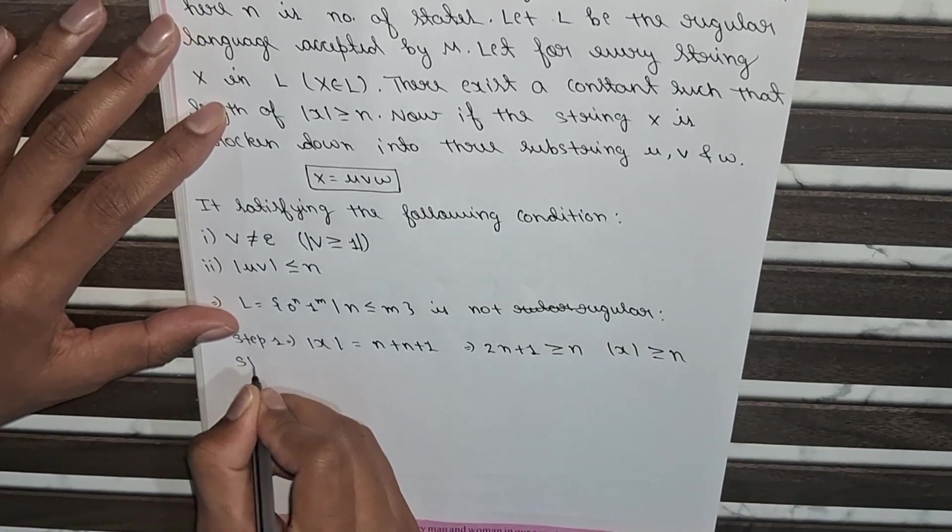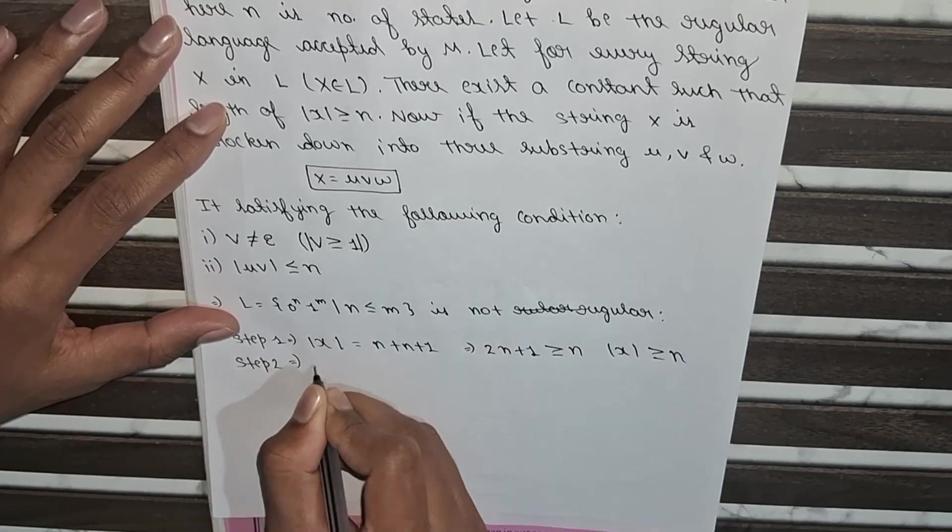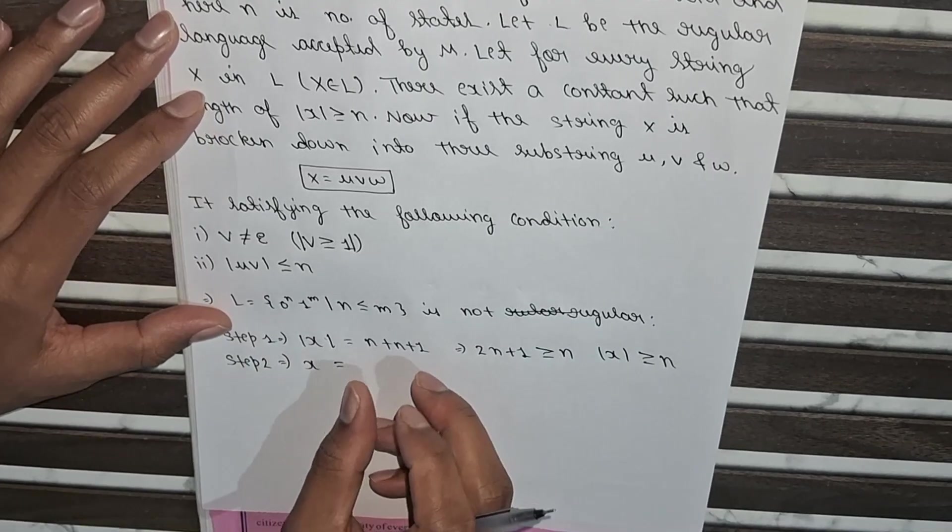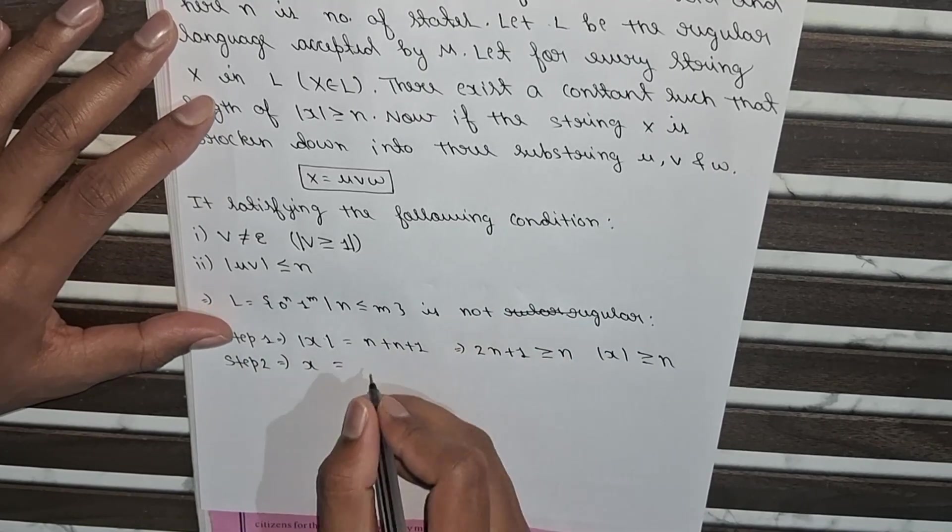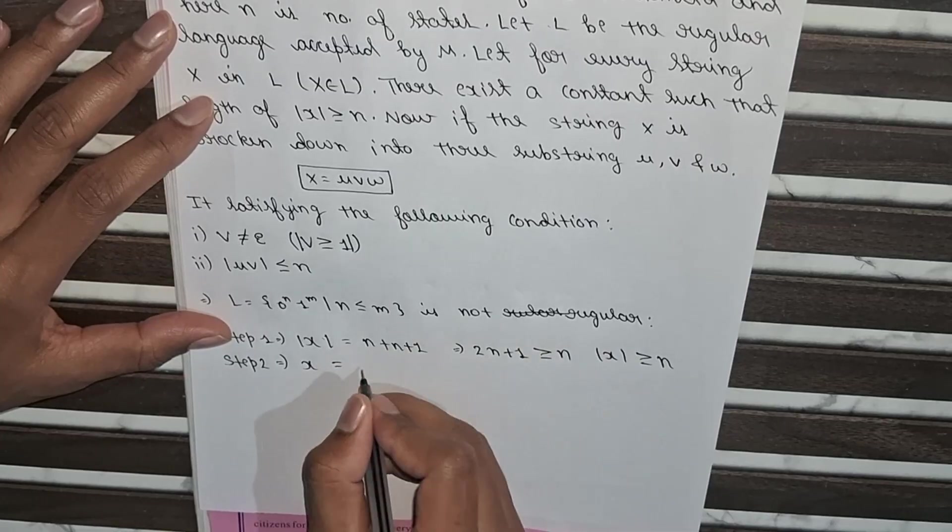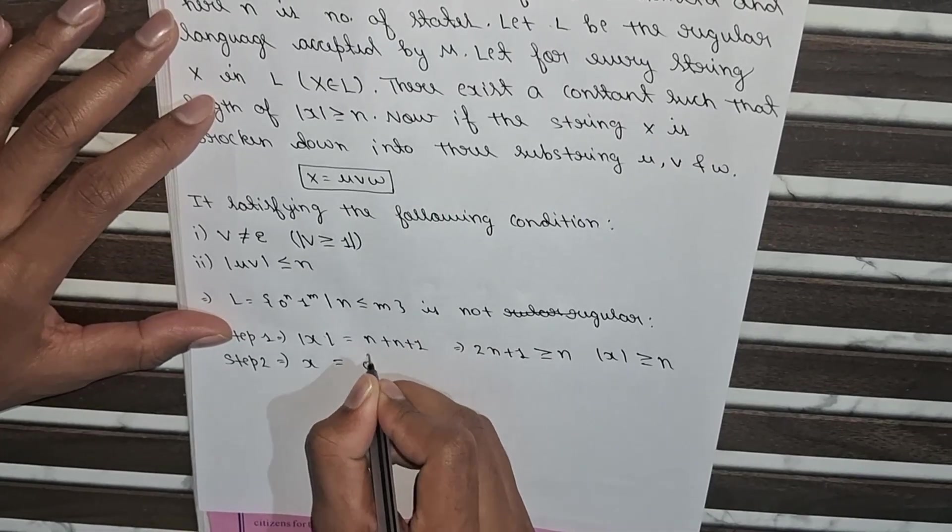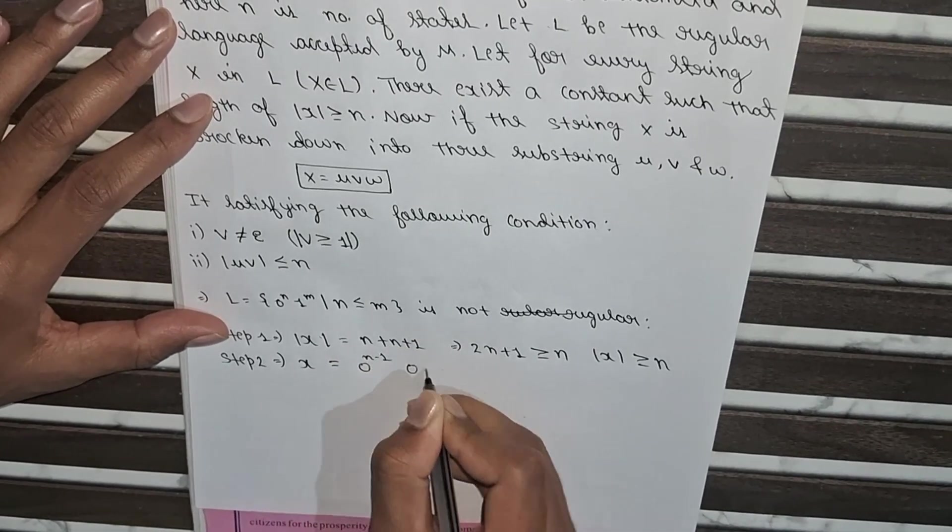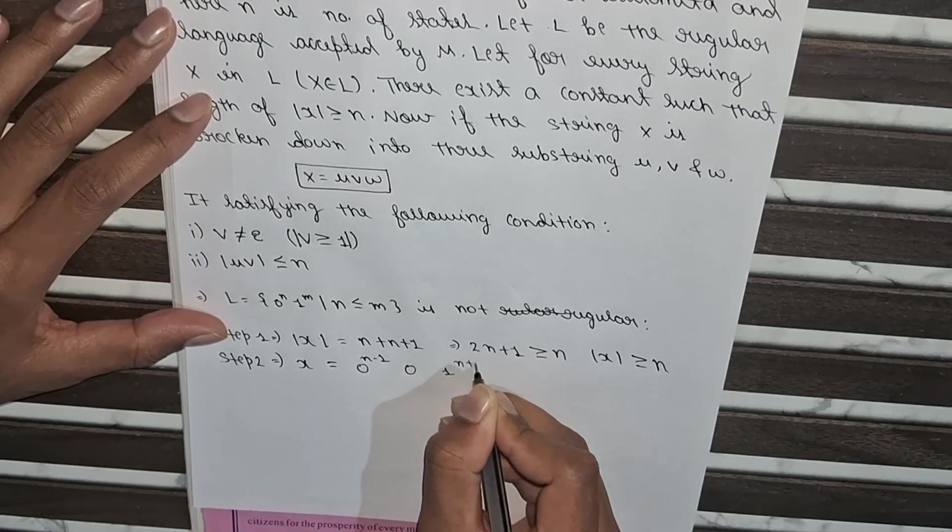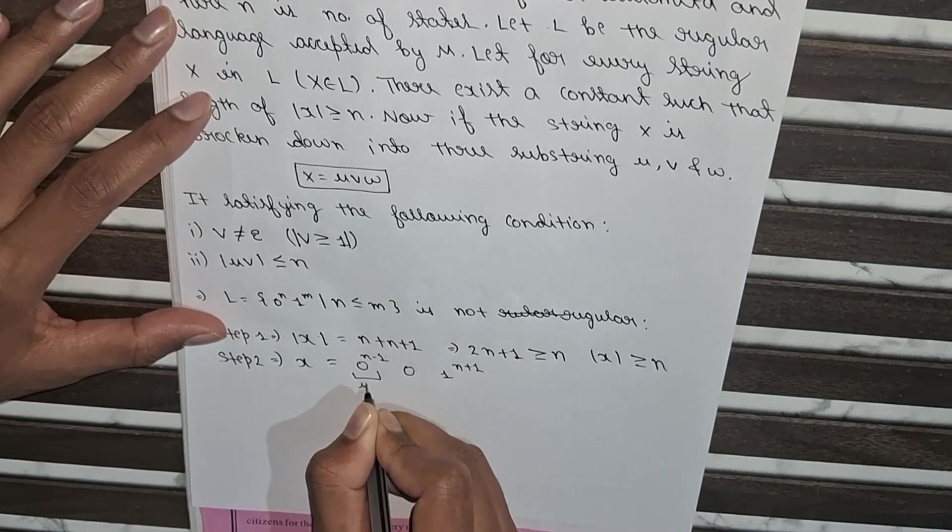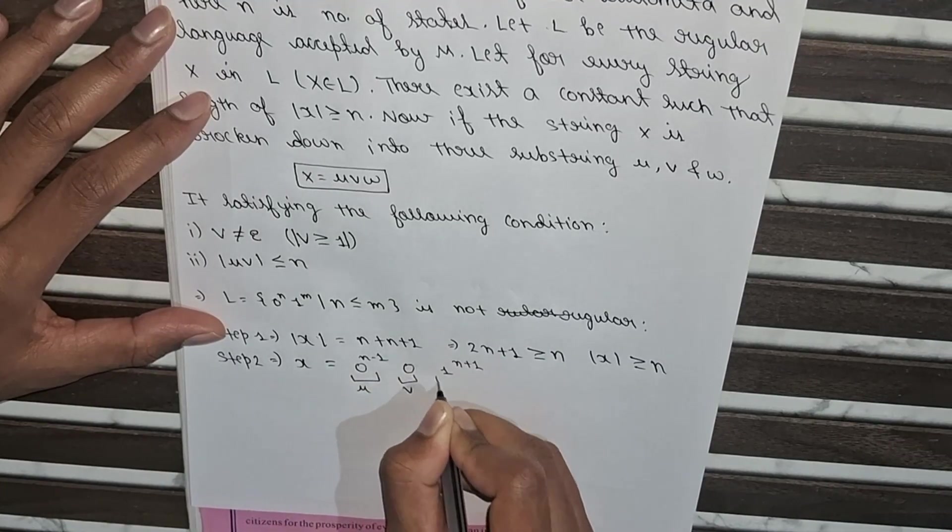So now we will move to step 2. Here we will break down into three substrings u, v, and w. So we will do like 0 to the power n minus 1, 0, 1 to the power n plus 1. Here we will take this as u, this as v, and this as w.